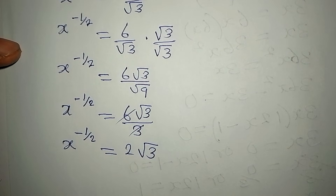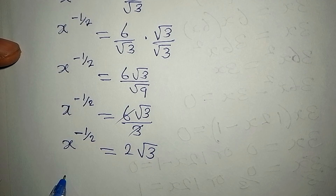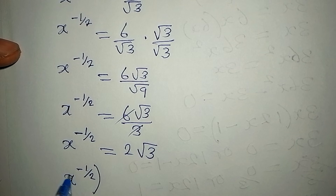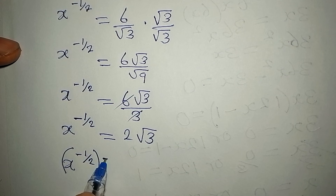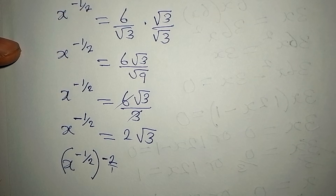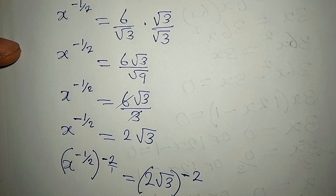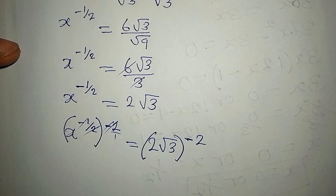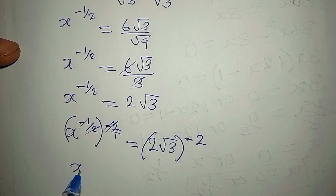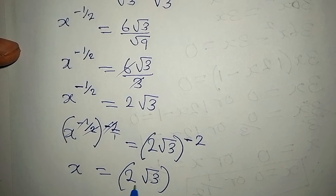To remove the power of negative 1/2, we raise both sides to its reciprocal, which is negative 2. On the left, negative 2 cancels negative 1/2, leaving x alone. On the right, we have 2 root 3 to the power of negative 2.